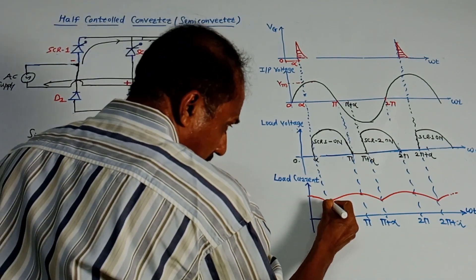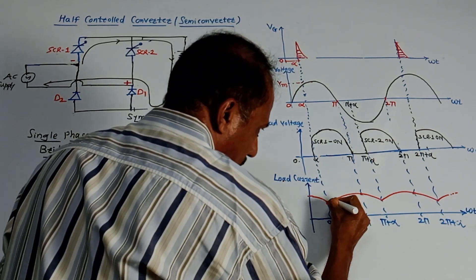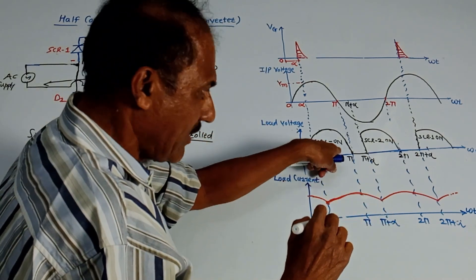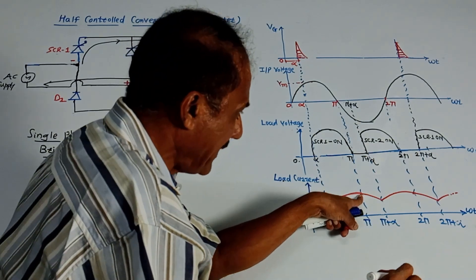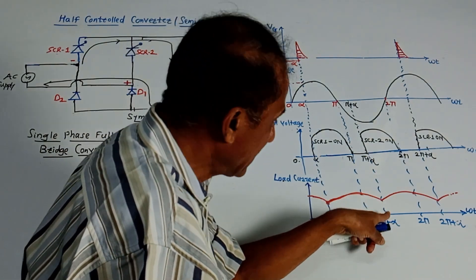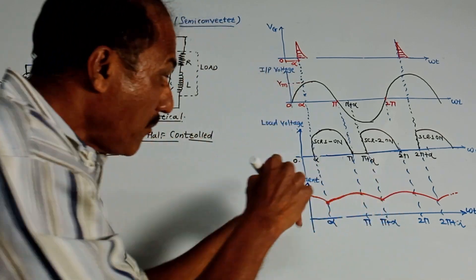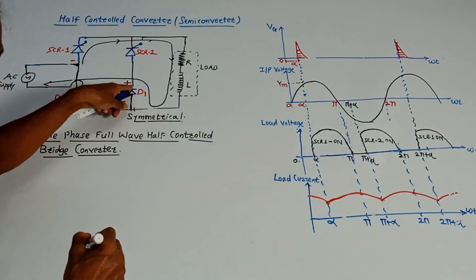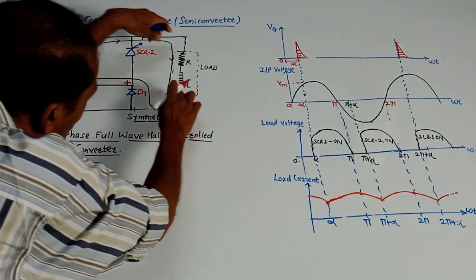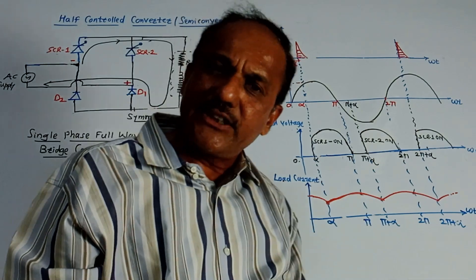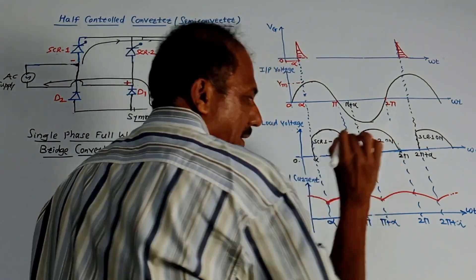Look at the load current waveform versus omega t. The value of load current increases up to pi because SCR1 is on from alpha to pi. Due to the inductor, this current will be continuous for some time period — let us say till pi plus alpha. This current will now flow through diode D2 and SCR1, so this load will be short-circuited. Whenever there is a short circuit, voltage across it is zero. So you are getting zero voltage from pi to pi plus alpha.